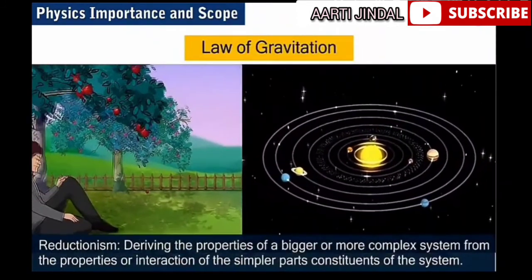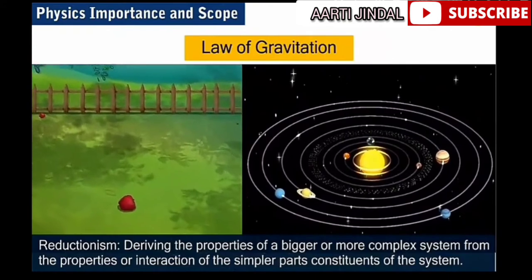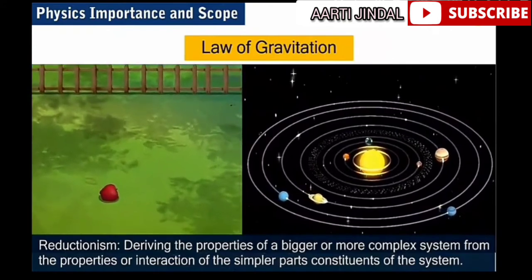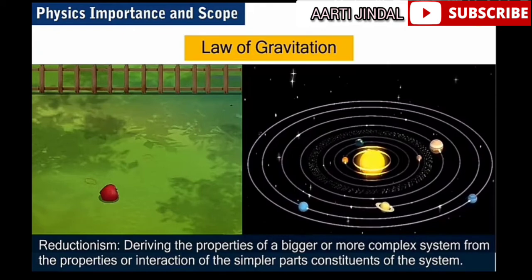Thus we derive the properties of a bigger or more complex system from the properties or interaction of the simpler parts constituents of the system. This approach is called reductionism and helps in understanding the properties of complex systems in physics, like functioning of satellites.